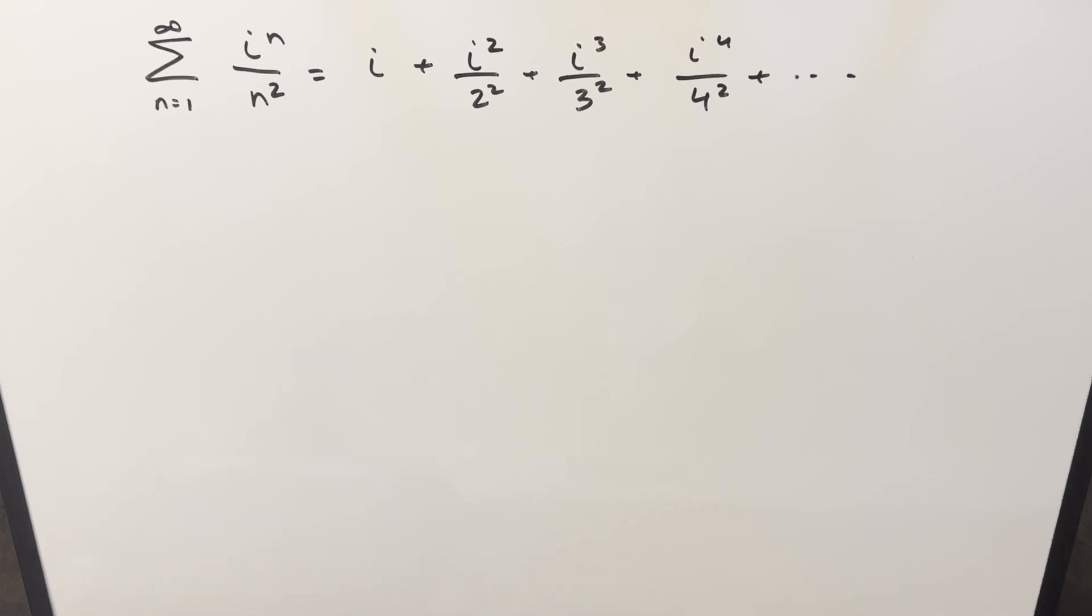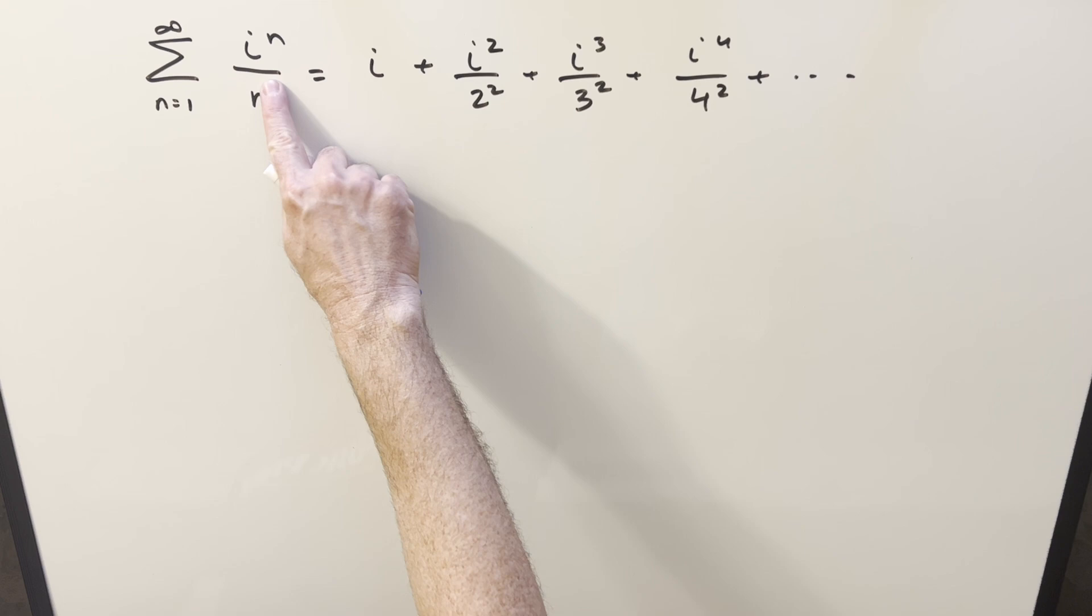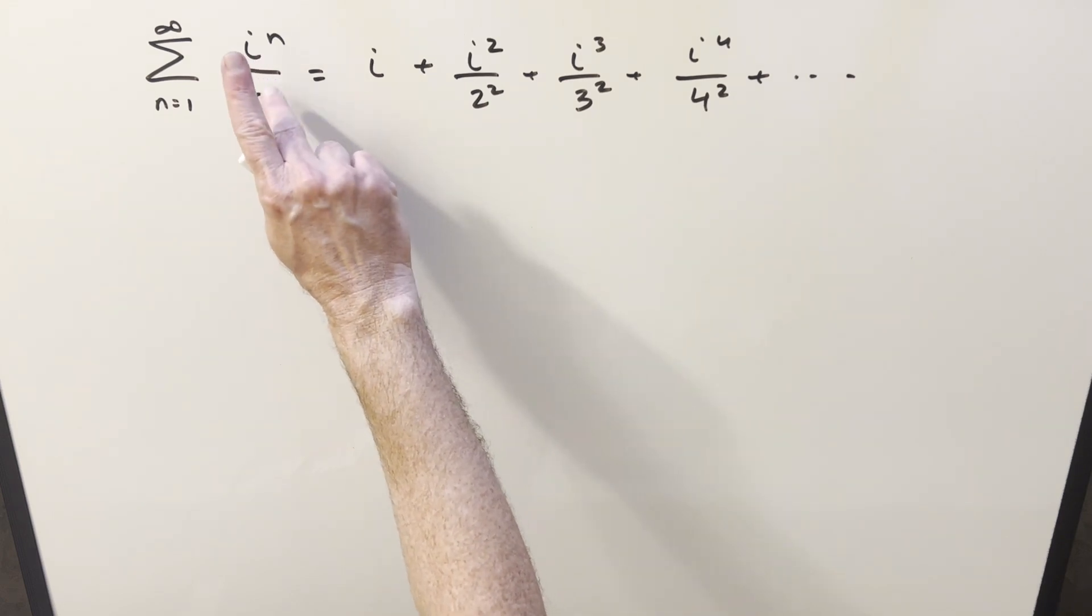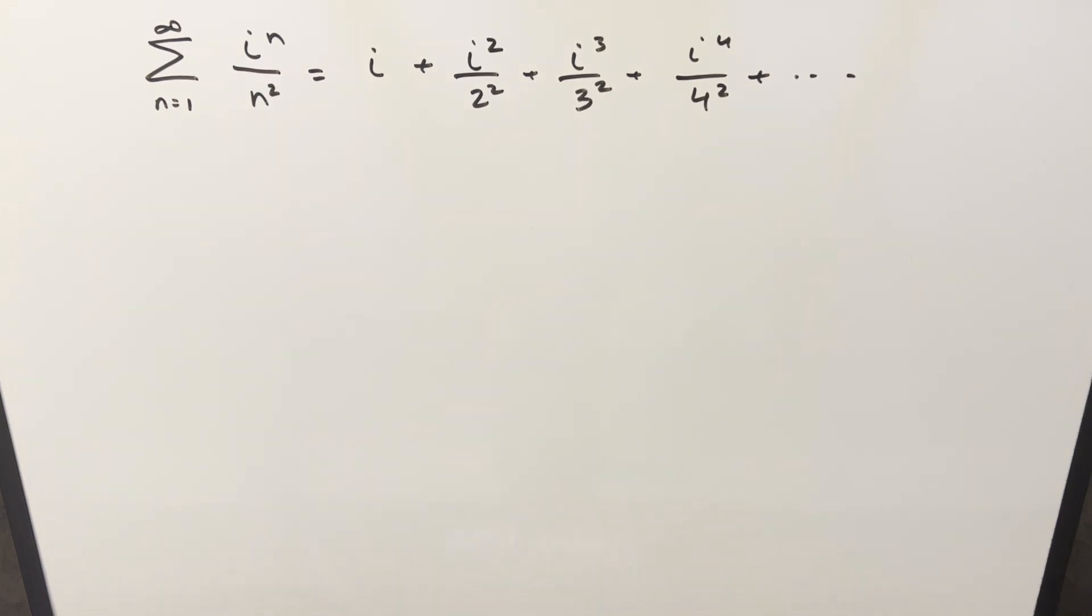Okay, we have here today an interesting series. We've got the sum from n equals 1 to infinity of i to the n over n squared. And over here to the right we just have a few terms expanded out. I got this idea from a video by CyberMath. He did the problem where it just wasn't squared, so he just did this one where it was just an n here. I'll probably do a video on that problem too, but right now we're looking at this case, which is just a little different, where we have n squared in the denominator.